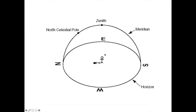So this is what the observer sees: this plane is the local horizon. The cardinal points north and south define the meridian, and you have the zenith right above the observer. The celestial pole is somewhere above the horizon — the north celestial pole if you are in the northern hemisphere, or the south celestial pole if you are in the southern hemisphere.